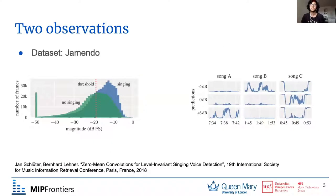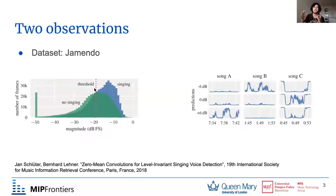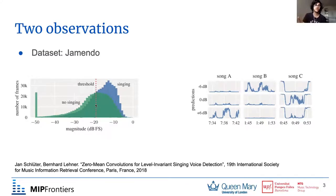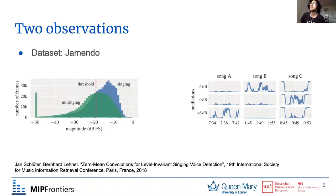There are two interesting observations made by Jan Schluter and Bernard Lennon. If you look at the image on the left, they're basically showing the typical volume range of sections of music that have singing voice and sections that have no singing voice. In general, singing voice is louder, so if you simply used a threshold, you would get around 60–65% accuracy in differentiating between singing and non-singing voice — on datasets like Jamendo.